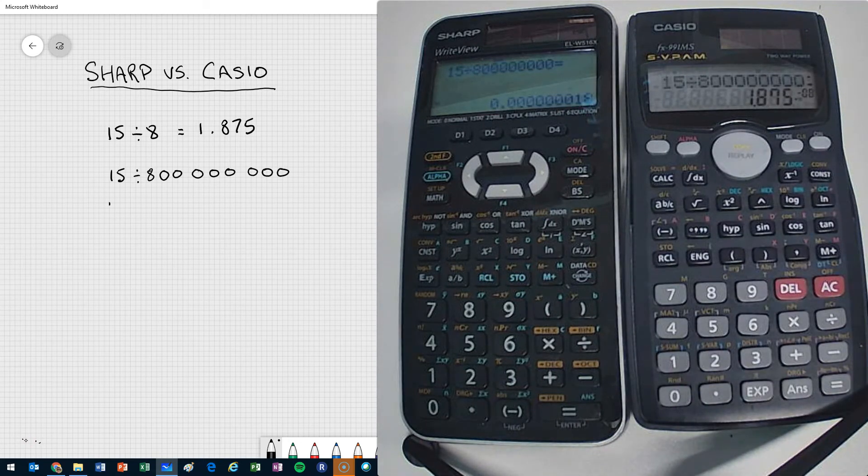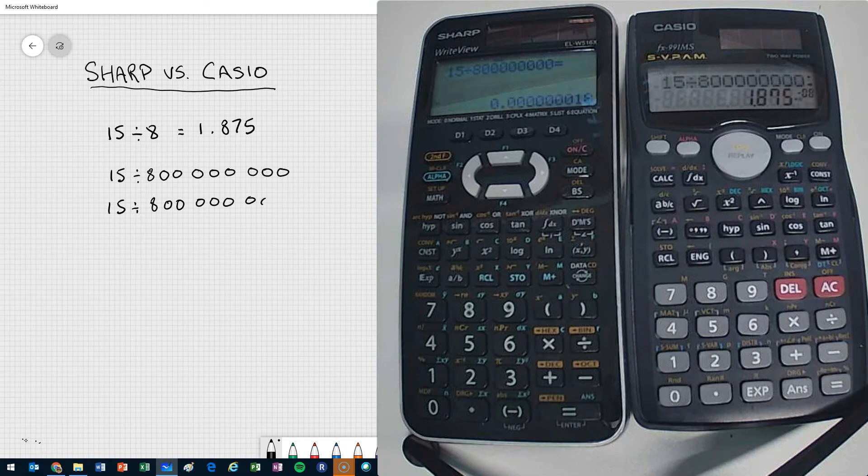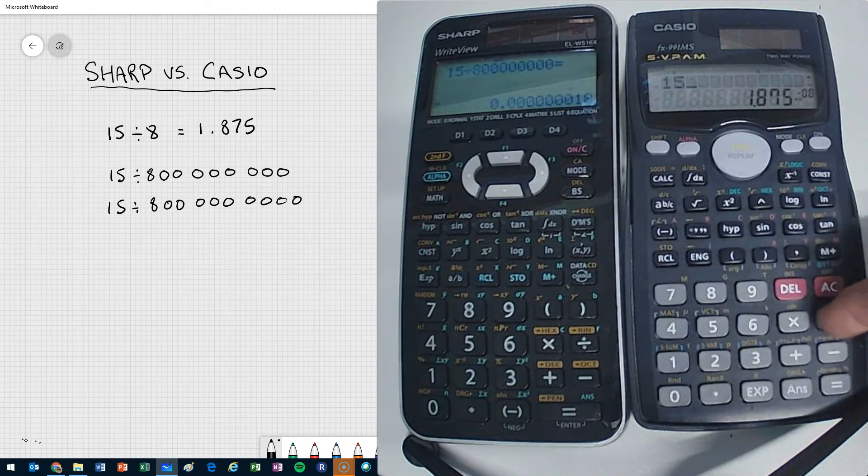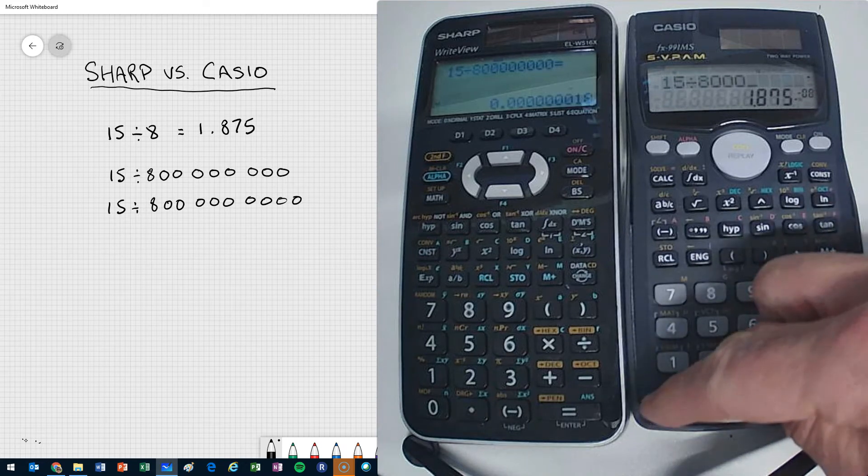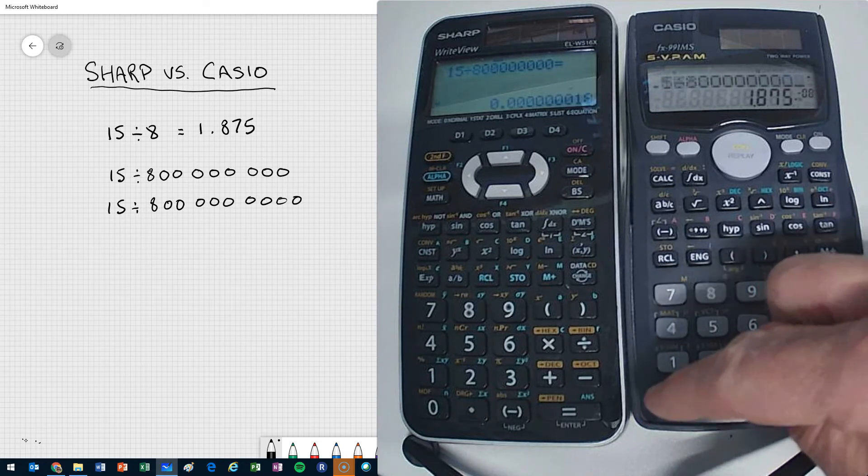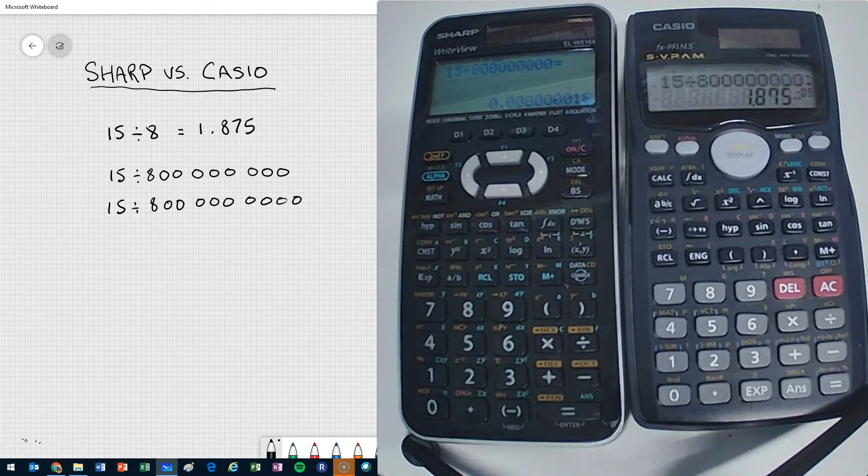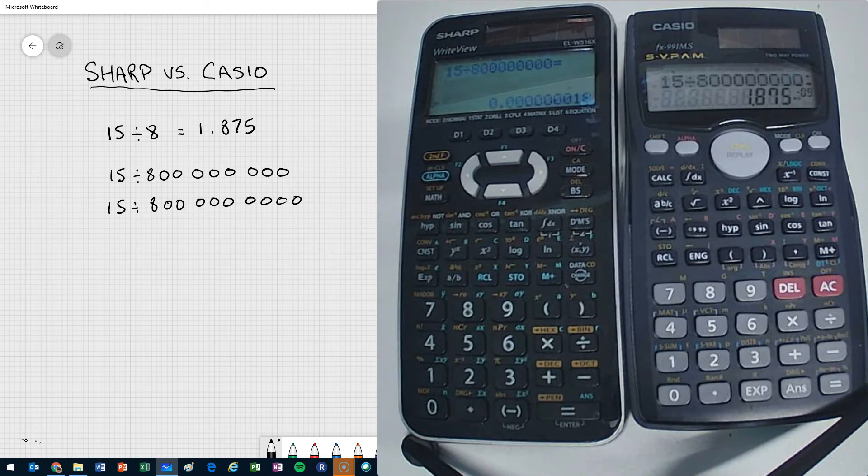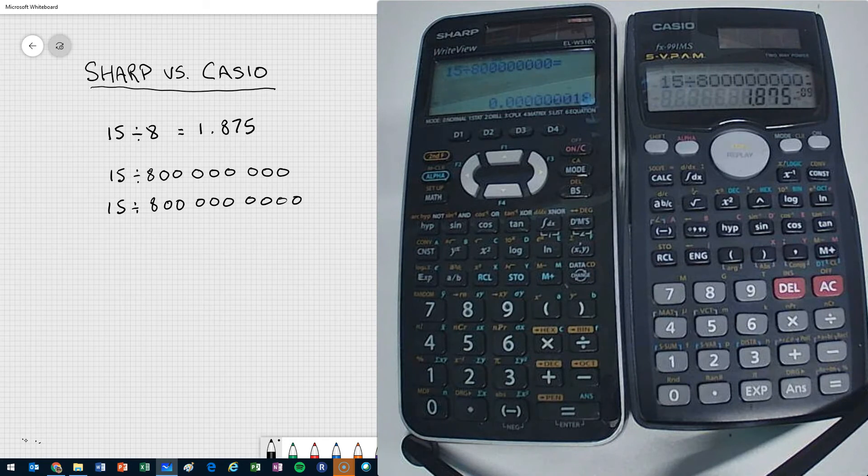So instead of that, I'm going to add one extra decimal place. So let me punch that into my calculator. So 15 divided by that. It gives me 1.875 times 10 to the negative 9 on the CASIO.